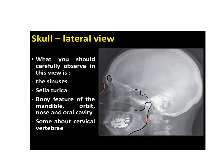Now the next is the skull lateral view. Here you should observe for the paranasal sinuses — all the paranasal sinuses are visible in the skull lateral view. Also you can see the sella turcica and the bony features of orbit, the mandible, nose, the oral cavity, and also the cervical vertebra.